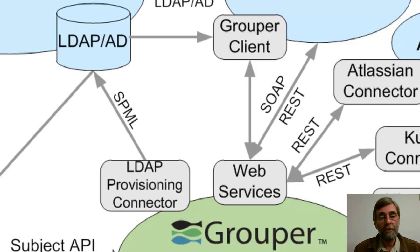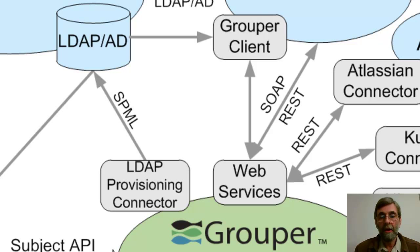One of the main things you want to do once you've built up lots of groups and other things in Grouper is provision some of those artifacts back out to your LDAP or Active Directory, and for that, Grouper provides the LDAP provisioning connector. You can have multiples of those, each with different characteristics for different kinds of provisioning tasks, all running in parallel.